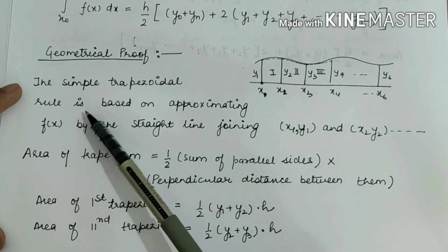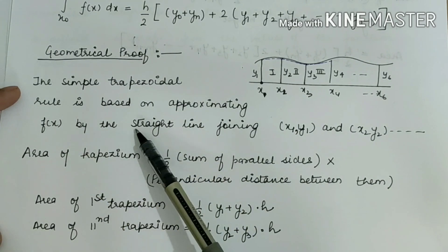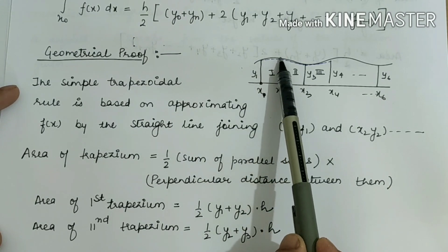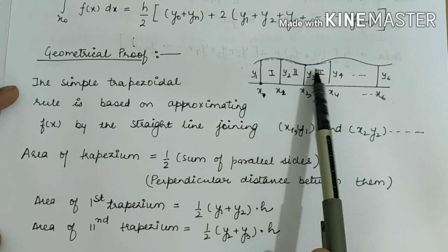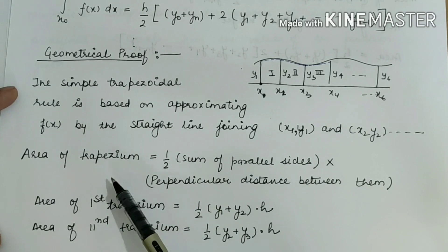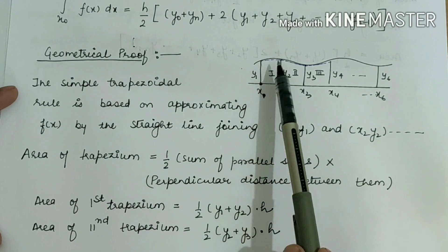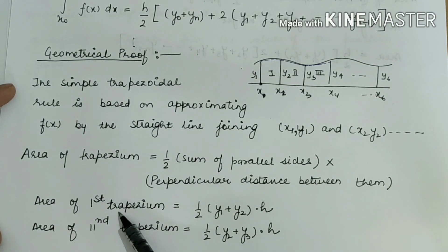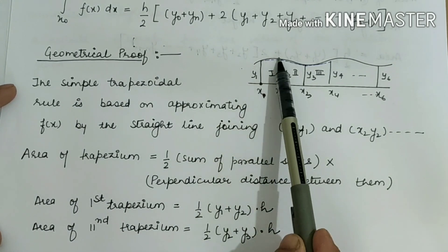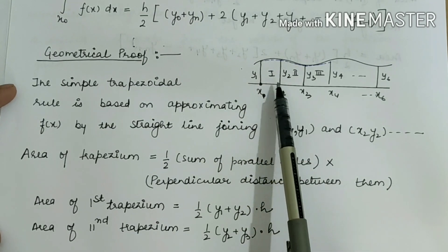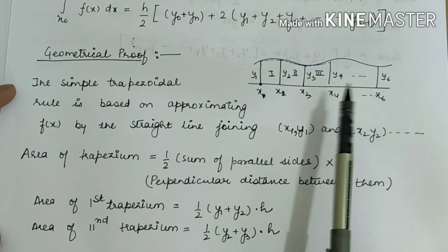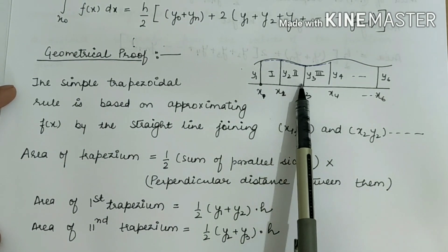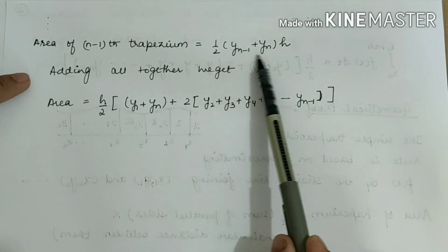The simple Trapezoidal Rule is based on approximating f(x) by the straight line joining (x1, y1) to (x2, y2) and so on. When we join those straight lines we get trapezium shapes. We know the formula for the area of a trapezium: half × (sum of parallel sides) × (perpendicular distance between them). The perpendicular distance between parallel sides is x1 − x0 = h. So the area of the first trapezium is (1/2)(y1 + y2) × h.